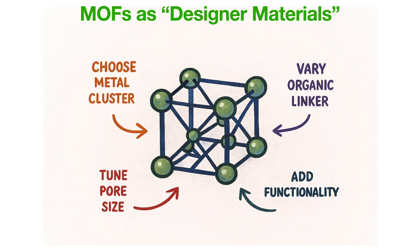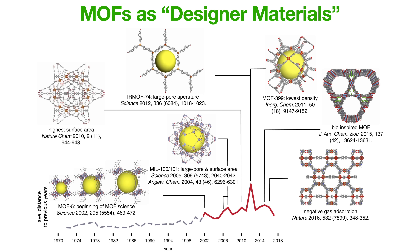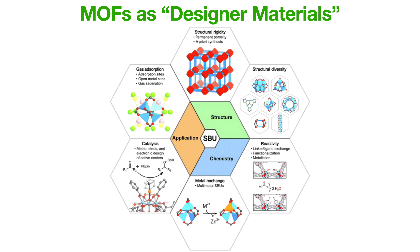You can think of MOFs as the ultimate customizable material. You change the metal, you change the electronic properties. You change the linker, you alter the pore size and functionality. By changing the functional groups, we can change the linker's attraction to different types of molecules — like polar groups for CO₂ capture or hydrophobic ones for fuel storage. In essence, MOFs allow chemists to design matter with atomic precision. That's why they're often dubbed designer materials.